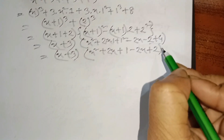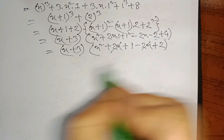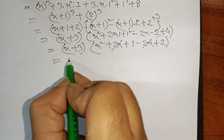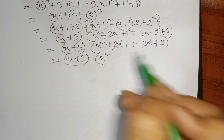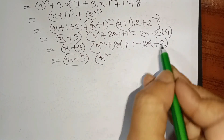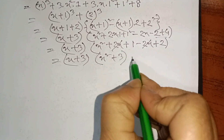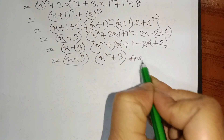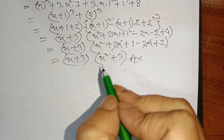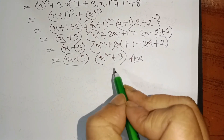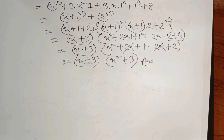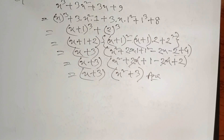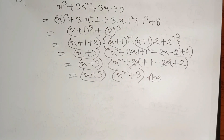Plus 2 and a plus 2x minus 2x cancel. So x plus 3 and x squared, and x squared is 3. So this is x plus 3 into x squared plus 3. So this is the result of x squared plus 3. Thank you.